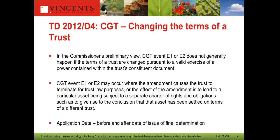The determination also says that CGT events E1 and E2 may still occur where an amendment causes a particular asset to be subject to a separate charter of rights or obligations - essentially where such a change results in the termination of the trust. There are still circumstances where an amendment can give rise to creation of a new trust and a resettlement for CGT purposes, and quite possibly for stamp duty purposes. But on the whole, the restrictions we had on amendments as a result of the ATO's interpretation under the Statement of Principles no longer apply, which gives us a little bit more room to move.